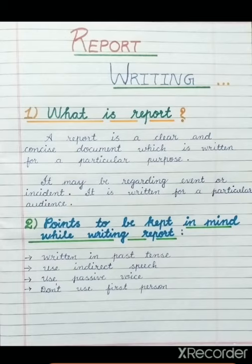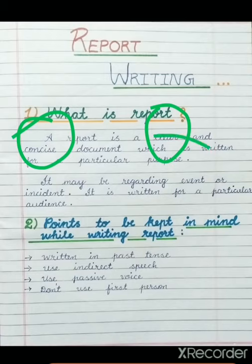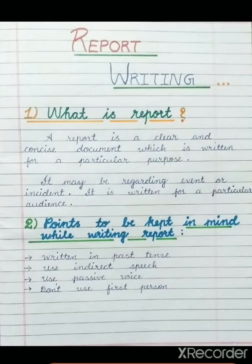Let's see what is a report. A report is a clear and concise document which is written for a particular purpose. There are three main points in this definition: the report must be clear — clear in the sense that you must be clear with your idea that you want to convey to your audience, and also clear with the language you are using while writing a report.